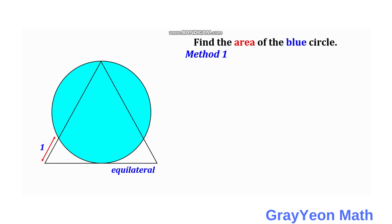To apply the tangent-secant theorem, we need to first draw a line from the topmost part of this equilateral triangle downwards. This line should be perpendicular to the base of the equilateral triangle. Since this angle is 60 degrees from the equilateral triangle and we form a right triangle, then this becomes 30 degrees. Next, we label this distance as x — this will be our tangent segment.